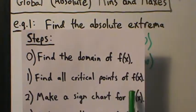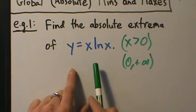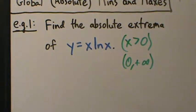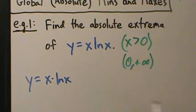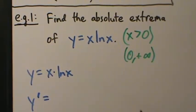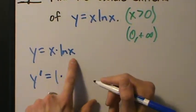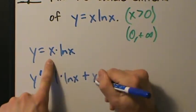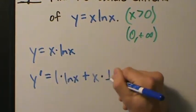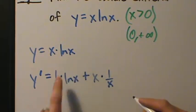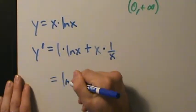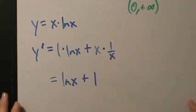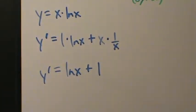Step one: find all the critical points of the function. Remember, to find critical points we have to find the derivative and then see where the derivative is zero and where it's undefined. We have x times the natural log of x, so we have to do a product rule. y equals x times natural log of x. So y prime equals derivative of the first, which is one, times the second, natural log of x, plus the first, which is x, times the derivative of the second, one over x. Simplifying: one times natural log of x is just natural log of x, and x times one over x is just one. So y prime equals natural log of x plus one.